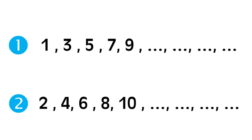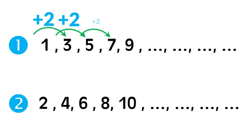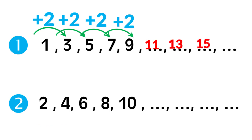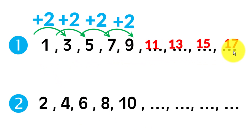Next guys, number patterns: one, three, five, seven, nine. It's increasing — yes, increased by two. From one to three, just add two. Plus two gives five, plus two gives seven, plus two gives nine. Nine plus two equals eleven. Eleven plus two equals thirteen. Thirteen plus two equals fifteen.